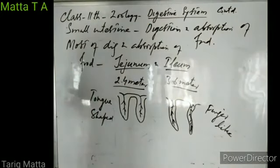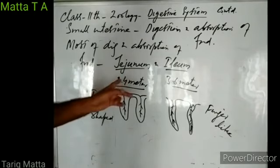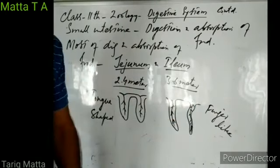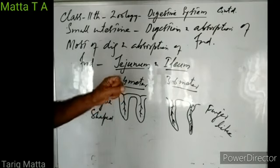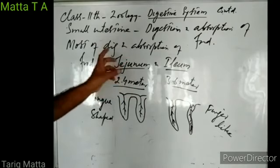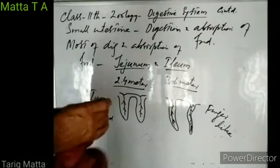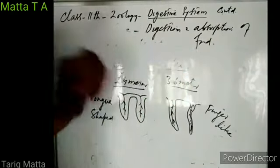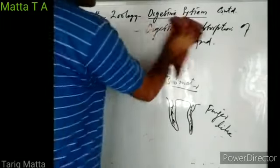In all these parts — duodenum, jejunum, and ileum — digestion and absorption of food occurs. So the small intestine is mainly meant for digestion and absorption of food. Then the small intestine is followed by the large intestine. I would like to draw a diagram to show you where the small intestine and large intestine are and how they appear.